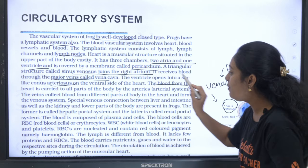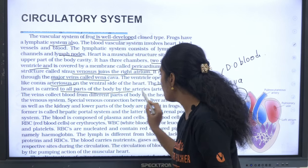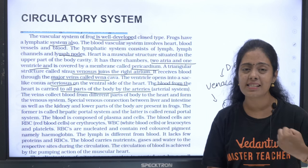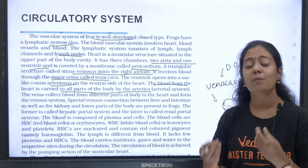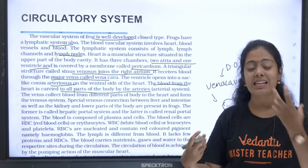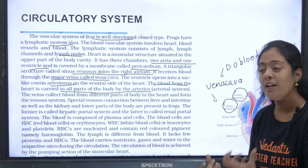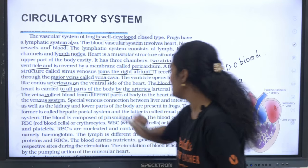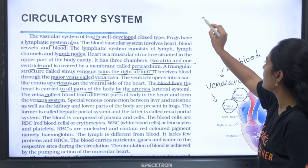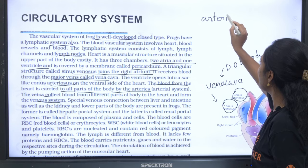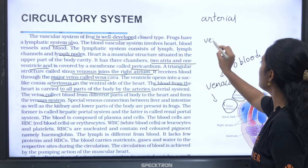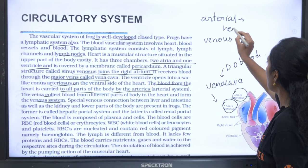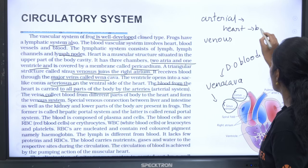The blood from the heart is carried to all parts of the body by arteries, which carry oxygenated blood. The blood from all body parts is carried back to the heart via veins — this is the venous system. The arterial system carries blood from the heart to the body parts; the venous system carries blood from the body parts to the heart.